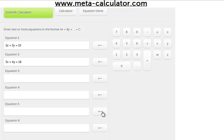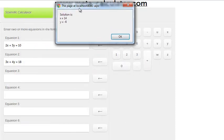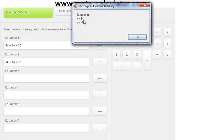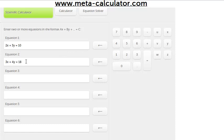I quickly entered the two equations we just solved: 2x plus 3y equals 10, 3x plus 4y equals 18. If you want to find the answer, all you do is hit the solve button. There you go—the solution is x equals 14, y equals negative 6. This is a great way to check your work whenever you're trying to solve systems of linear equations. You can enter the two equations in whatever form you want, then hit the solve button.